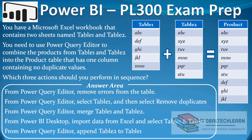Out of the 5 steps we have to select 3. The steps are: from Power Query Editor, remove errors from the table; from Power Query Editor, select table 1 and then select remove duplicates; from Power Query Editor, merge table 1 and table 2; from Power BI desktop, import data from Excel and select table 1 and table 2; and from Power Query Editor, append table 2 to table 1.